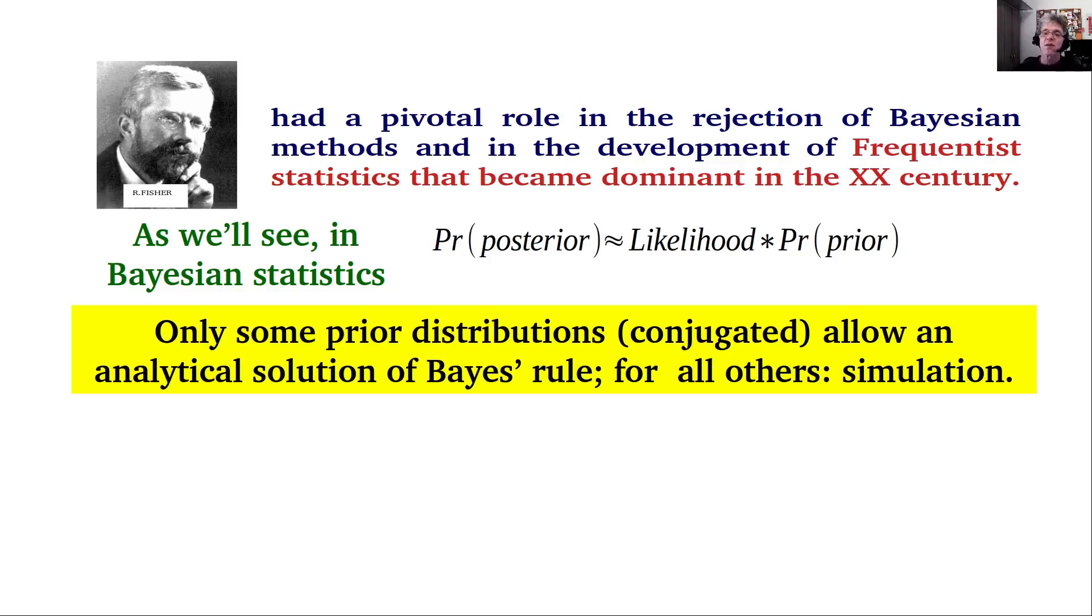For different sets of data, different prior distributions provide different posterior distributions, the outcome of the analysis, and this was thought to be, correctly, as arbitrary because there are no written or formal rules of how to define priors. For all other situations in which no analytical solution was feasible, we had to do simulations, which were of course impossible in the 1920s and 1930s when no computers existed.